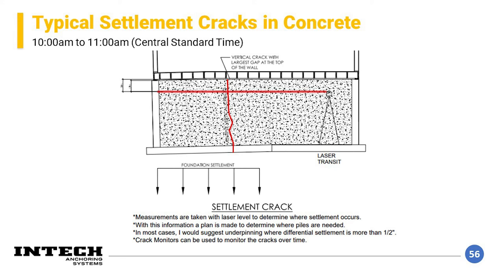Vertical cracks can also indicate settlement. You'll typically see several of them in a row across the wall — more common when the wall has some type of reinforcing. The vertical crack will be small at the base and start to widen towards the top of the wall. Measuring in the same manner with the laser level will indicate what the differential settlement is.